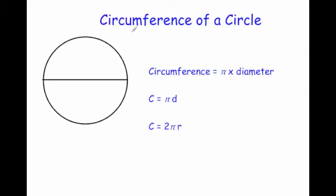In this video we're going to look at how to calculate the circumference of a circle. The circumference is just a fancy name for the perimeter of a circle, and it is given by the formula: circumference equals pi times diameter. So the whole way around the outside of a circle is found by multiplying the diameter by pi.